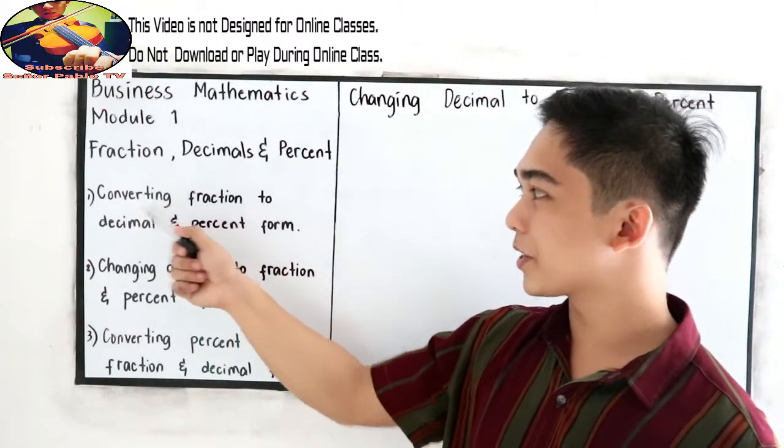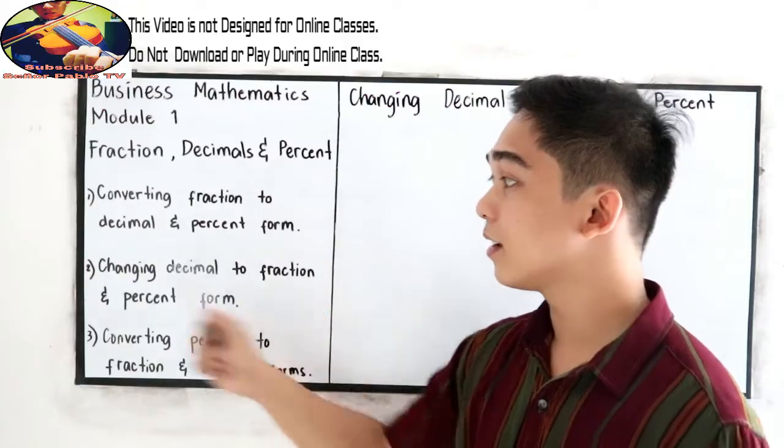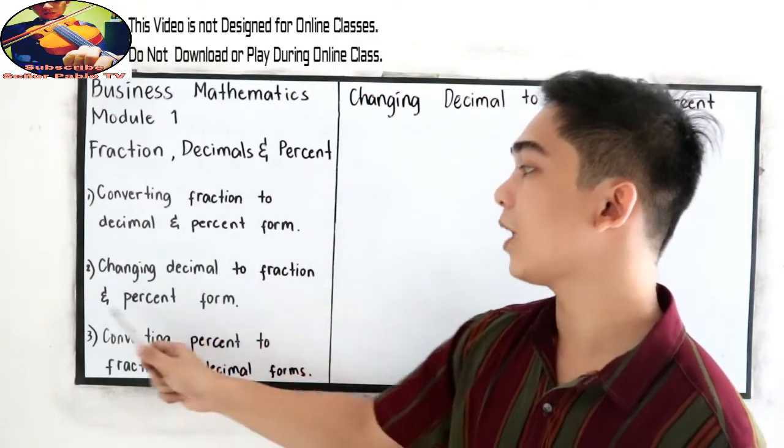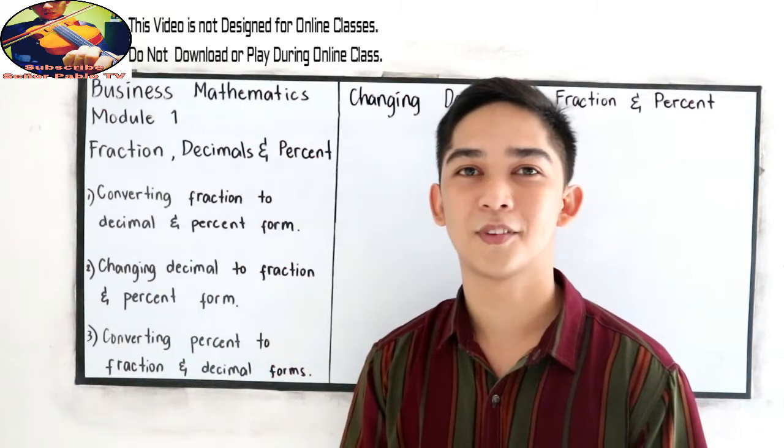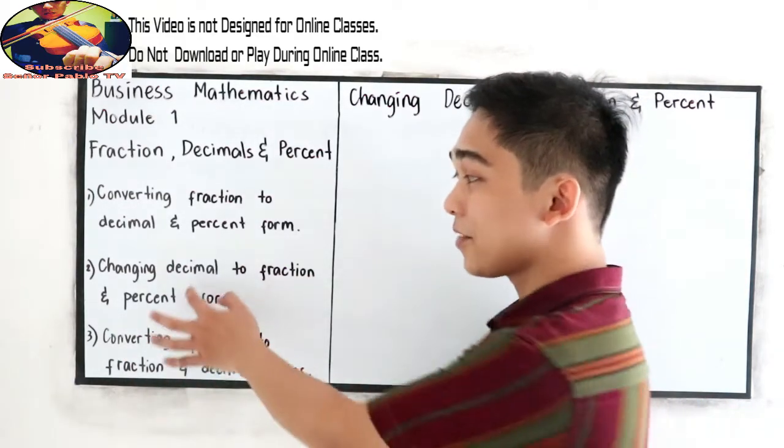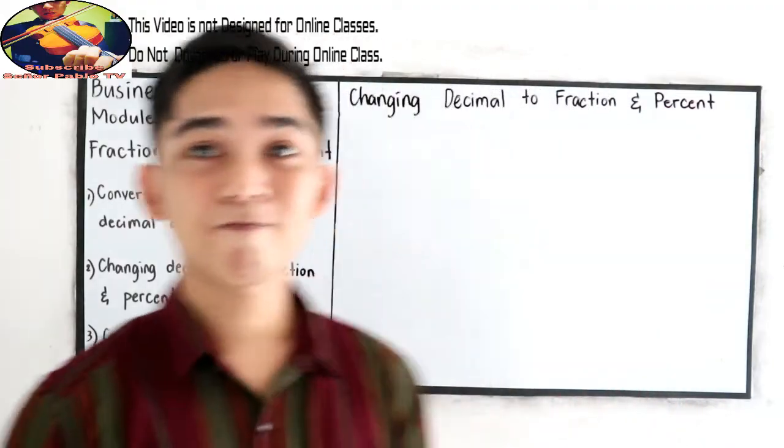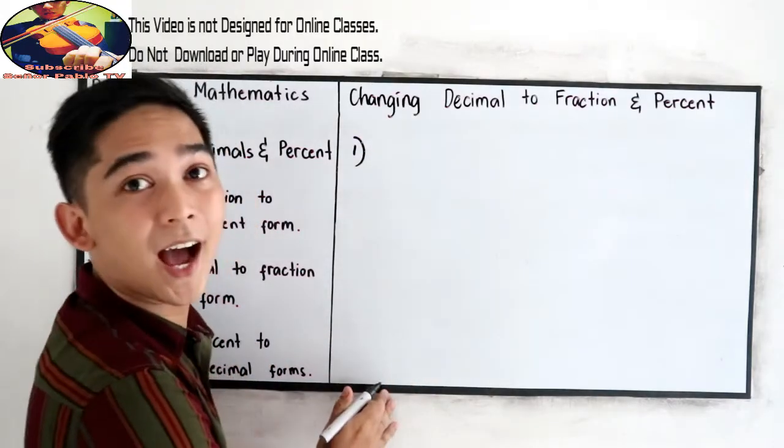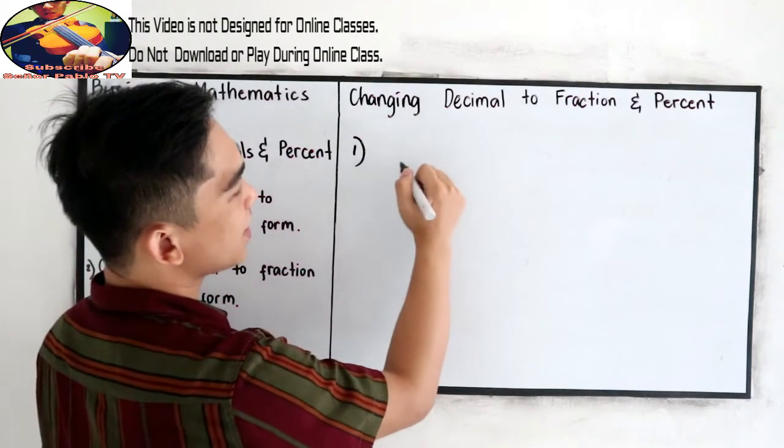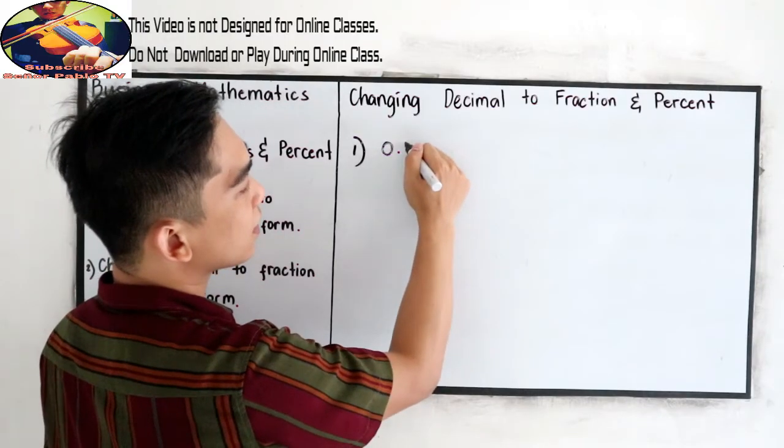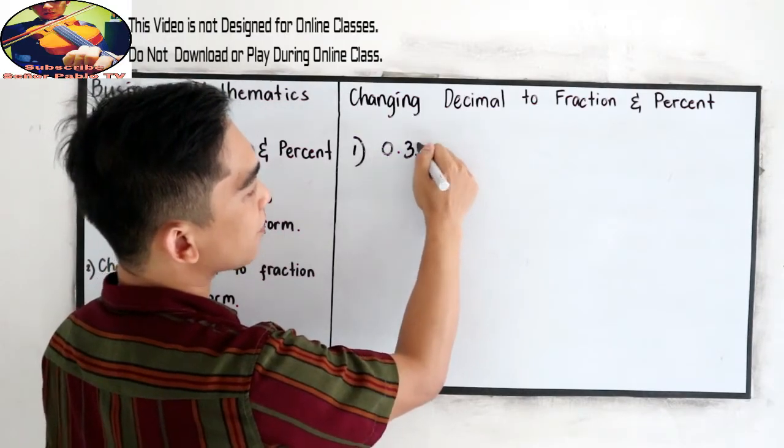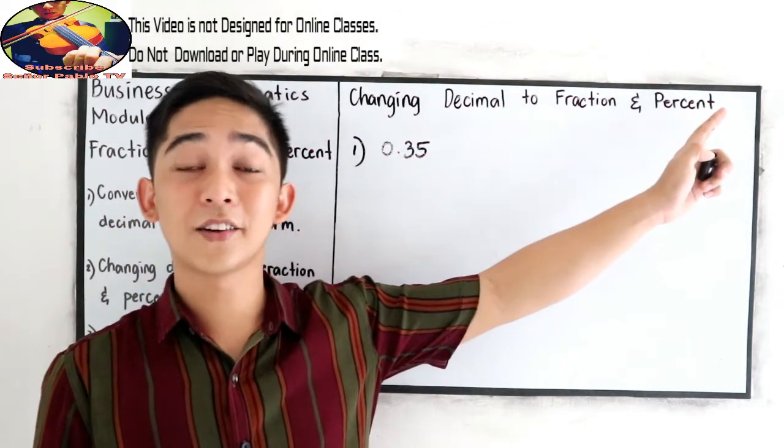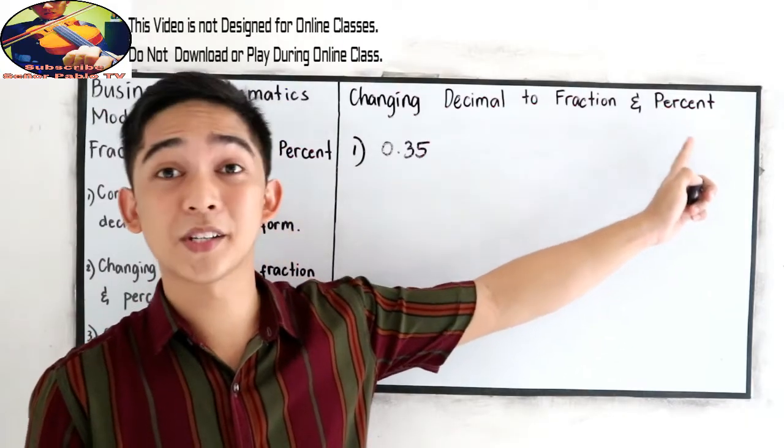So we're done converting fraction to decimal and percent. And now we're going to discuss changing decimal to fraction and percent form. So this time the given is decimal. So let's start. Number one, if we have, let's say, 0.35.